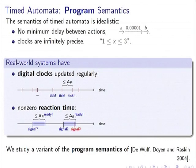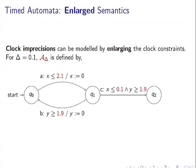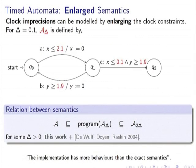We study a variant of this program semantics. Imprecisions in timed automata can be modeled differently: consider a clock constraint x < 2. When the real system evaluates this constraint as true, it can only guarantee x < 2 + δ because of imprecisions. For example, with δ = 0.1, and similarly y > 2 becomes y > 2 − δ. So we enlarge all the guards to model these imprecisions.